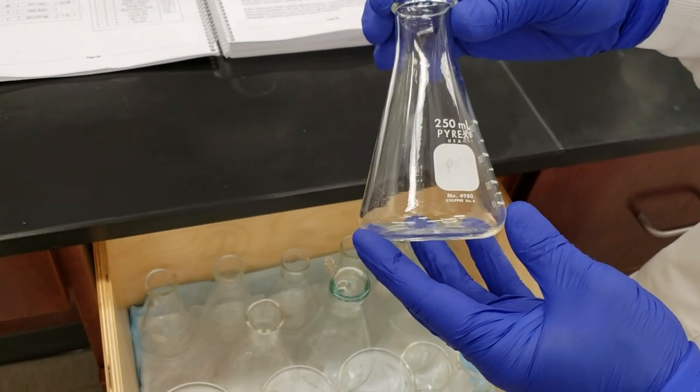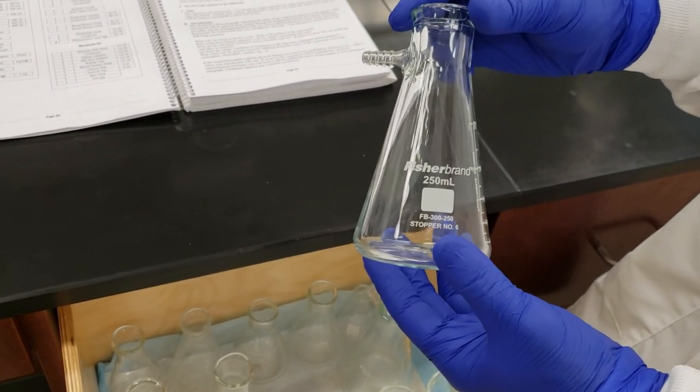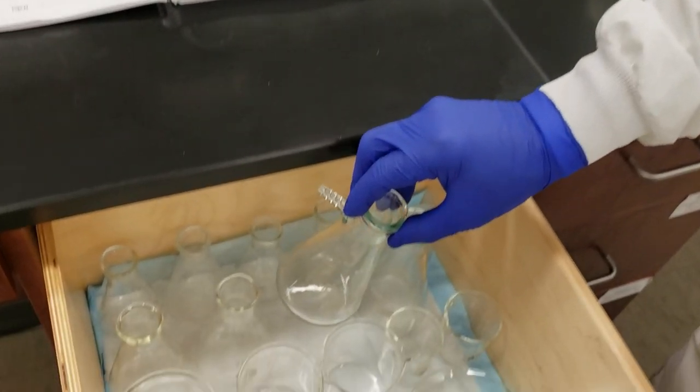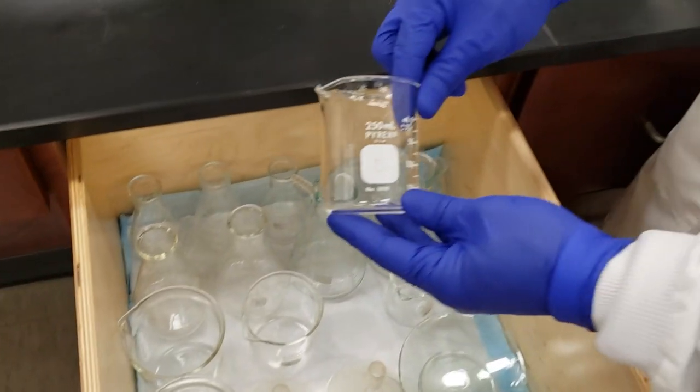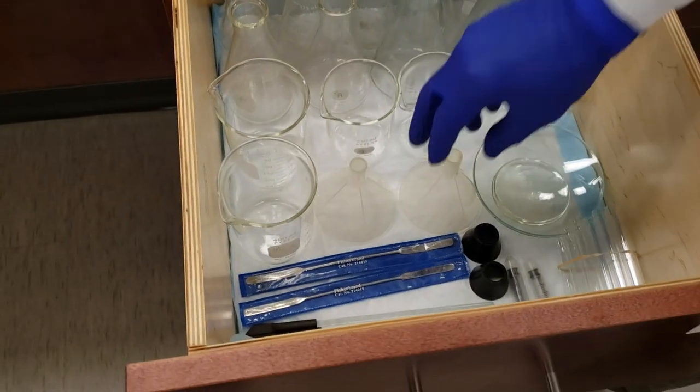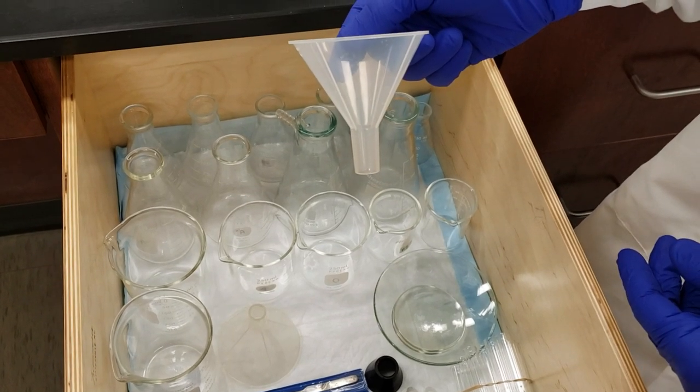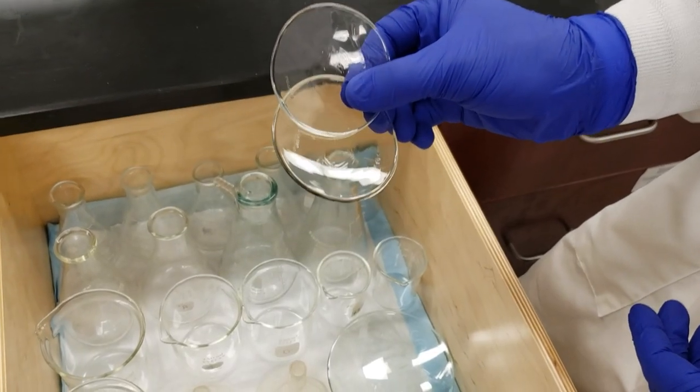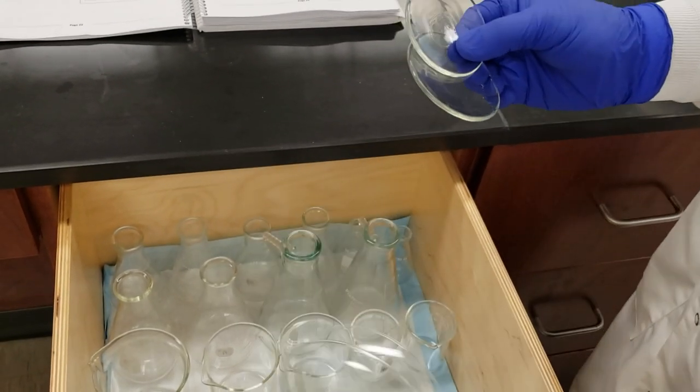The last of our flasks is our filter flask, a 250 mL with a vacuum adapter attached to the side for suction filtration. We've got two of those. We have three different beaker sizes: 100 mL, 250 mL, and 400 mL. Along with our beakers, we have powder funnels to pour liquids and solids. We have a series of watch glasses, two smaller and two larger, used to weigh out starting materials and final products.